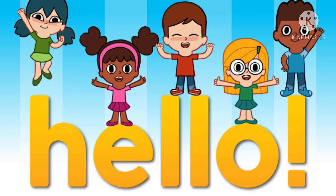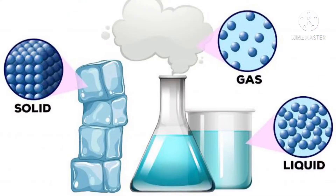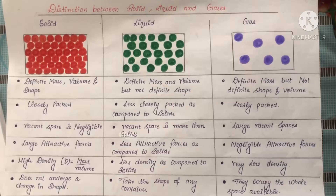Hello my dear students, I hope you all are fit and fine. This is our second lecture on matter and its composition. Now you all know very well what is matter and its three states. Today we are going to start the next topic, that is distinction between solid, liquid and gases. So, let us start this topic.